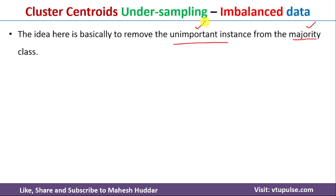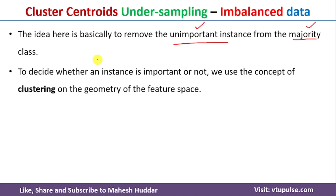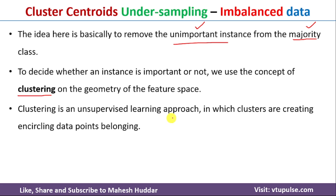The question is how to identify unimportant instances. For that reason, we use the clustering concept. Clustering is an unsupervised machine learning technique in which we create clusters around data points. Data points that are near to each other are put into one cluster, while data points that are far away from one another are put into different clusters. I have already discussed the different clustering algorithms — the link for those videos is given in the description below.